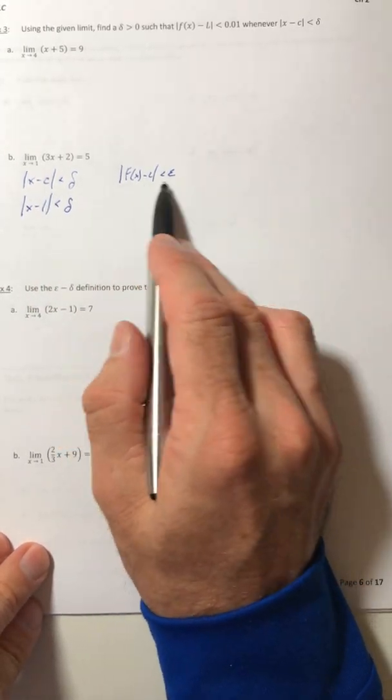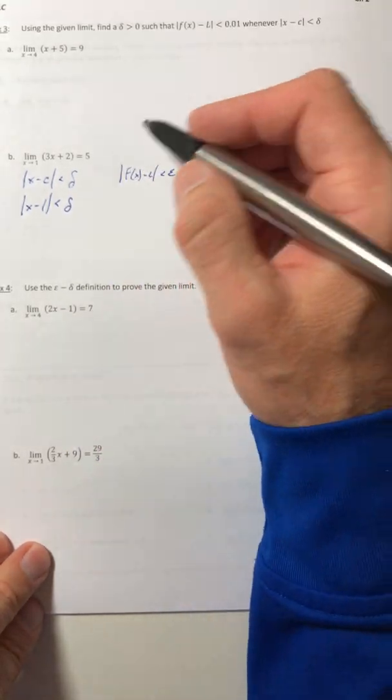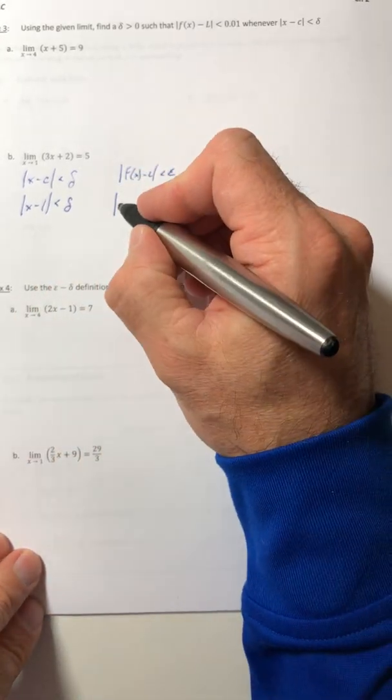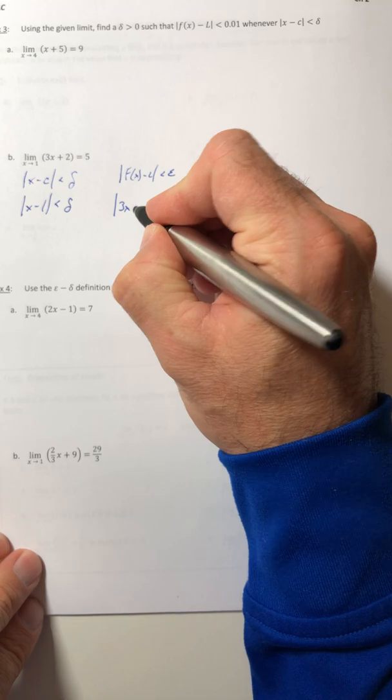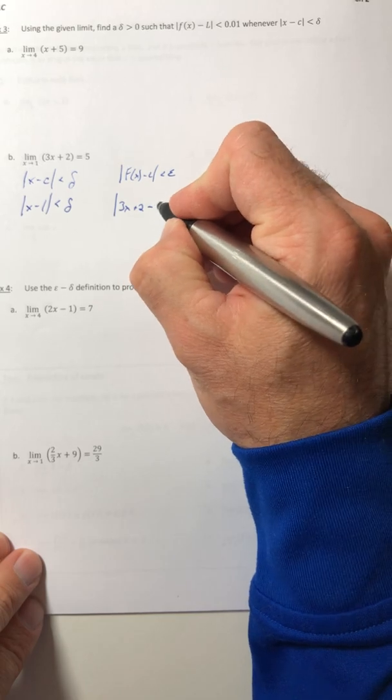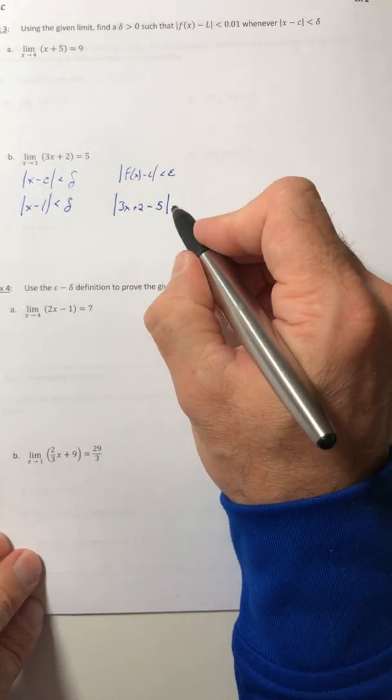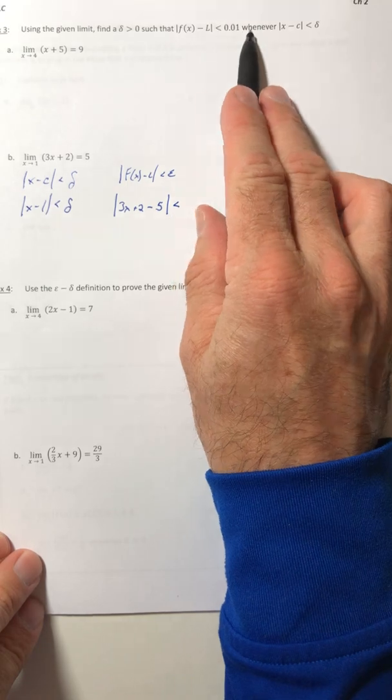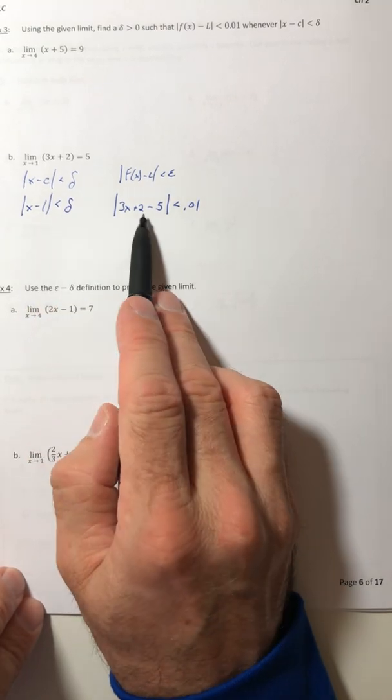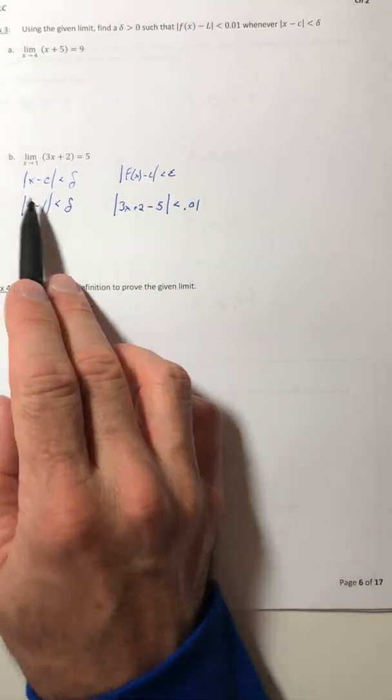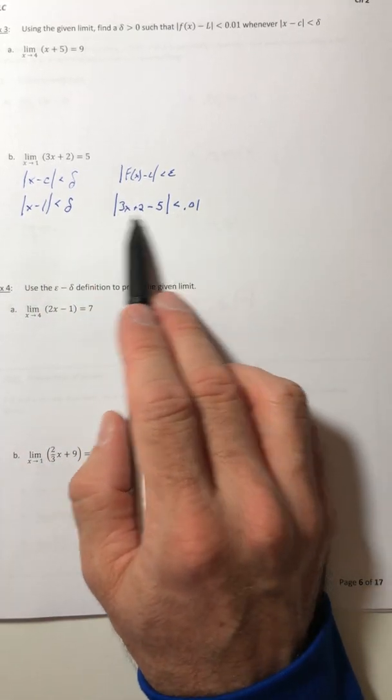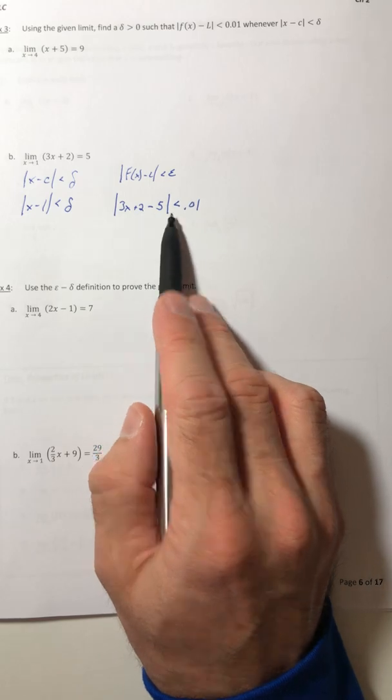Over here on the second inequality we set up, we do know a lot. We know the function - that's the 3X plus 2. And you know the limit value. That's the 5. And in this case, you also know epsilon. That's the 0.01. So we've set up and plugged in as much stuff as we can. Your first inequality, you can't do anything else. It's just done. It's this one over here that we can start doing things. We can start to simplify and combine like terms.